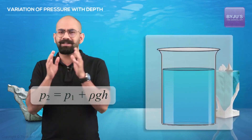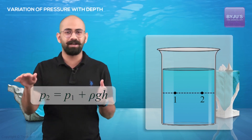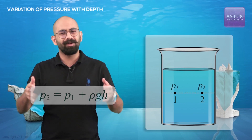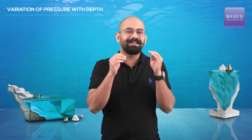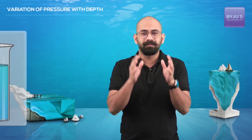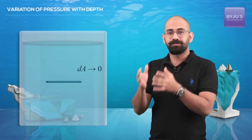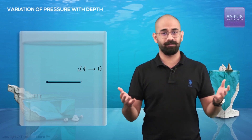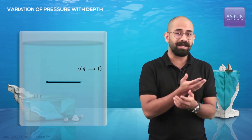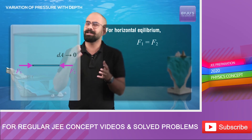But wait — this formula also means that if I take two points at the same depth, or basically two points on a horizontal line, the pressures will be exactly the same. In fact, this can easily be proved if I consider a thin horizontal cylinder where DA tends to 0. Because the fluid is static, the net force has to be 0. So if the forces from the sides are F1 and F2, then for horizontal equilibrium, F1 has to be equal to F2.